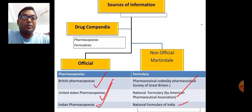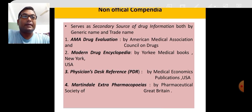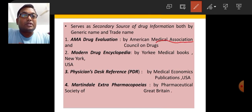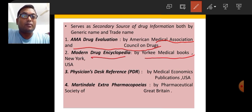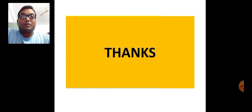There are also non-official compendia that serve as sources of drug information, available by both generic name and trade name. These include: AMA Drug Evaluations by the American Medical Association and the Council on Drugs; Modern Drug Encyclopedia by Yorke Medical Books, New York; Physician's Desk Reference by Medical Economics Publications, USA; and Martindale Extra Pharmacopoeia by the Pharmaceutical Society of Great Britain.